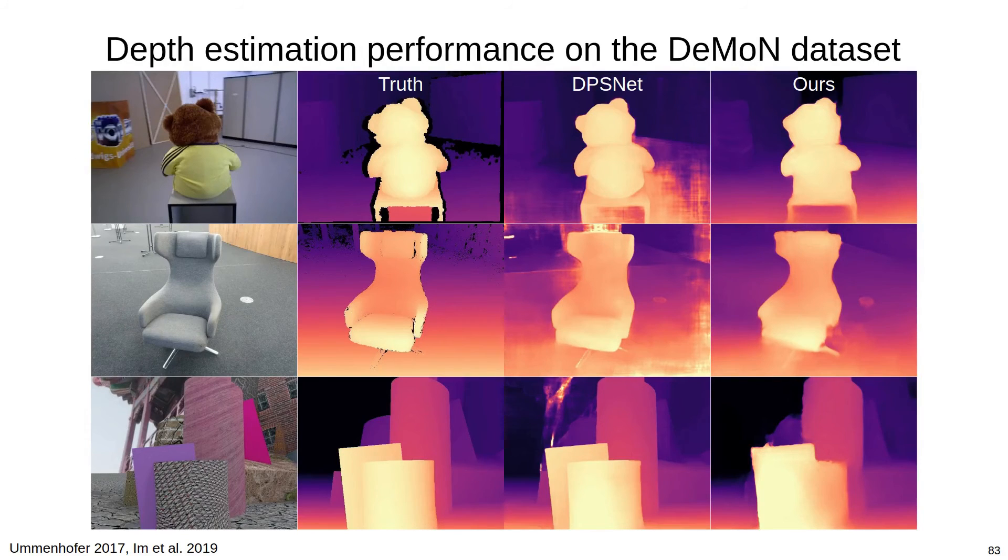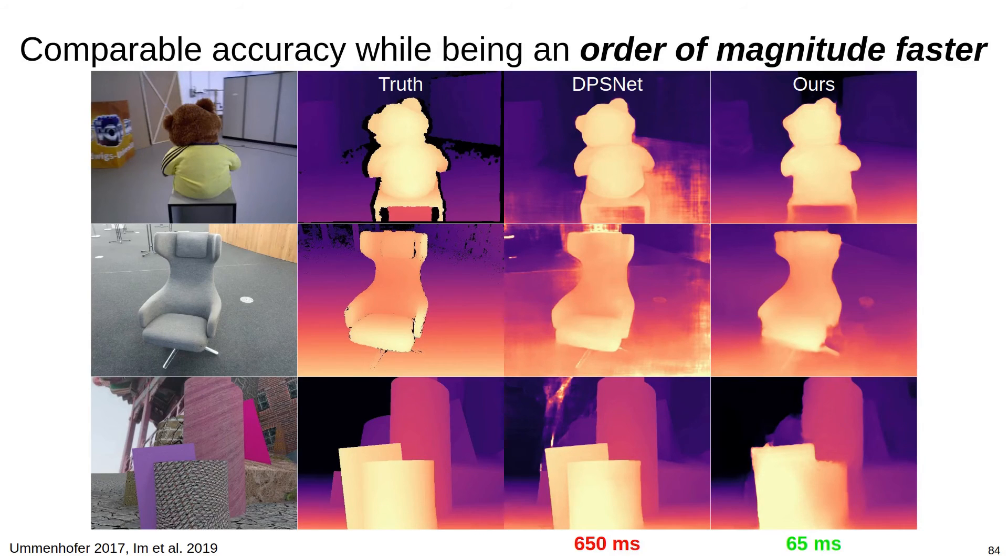Here we show quality of the depth estimation performance on the dataset compared to DPSNet. Across the benchmark, we achieve comparable depth accuracy to DPSNet. However, we're nearly an order of magnitude faster. DPSNet processes each VGA image in around 650 milliseconds, while our method takes only 65 milliseconds.